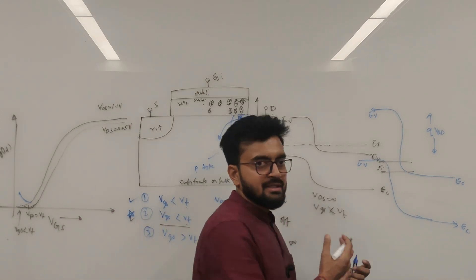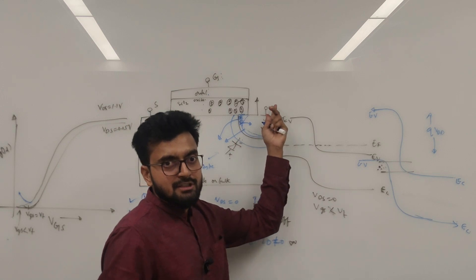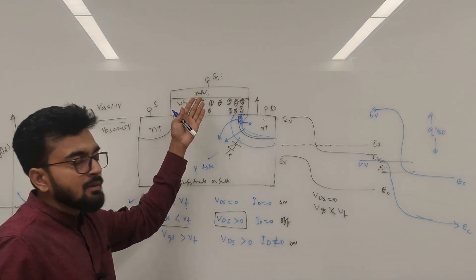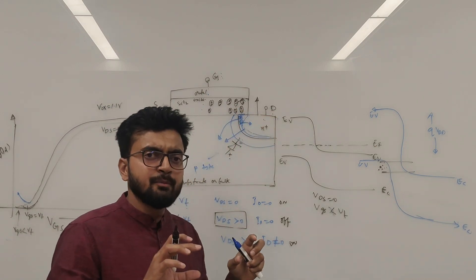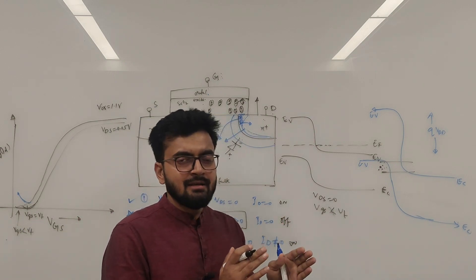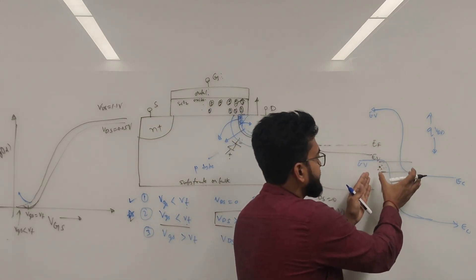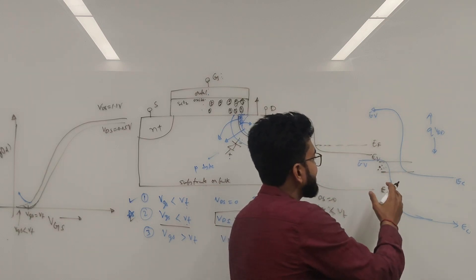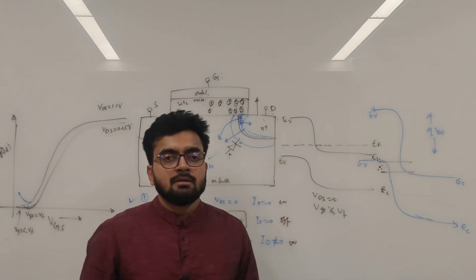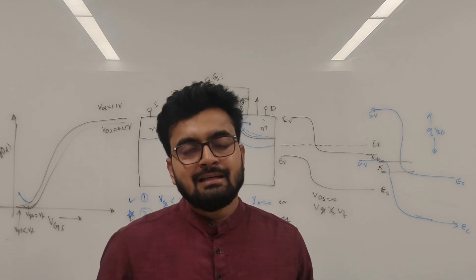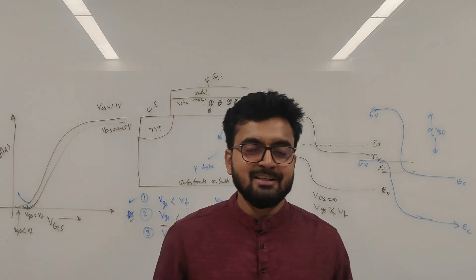This is known as band-to-band tunneling. The graph gets steeper as we increase the voltage at the drain while keeping the gate voltage fixed, or by fixing the drain voltage and reducing the gate voltage. The key idea is that as the potential difference between the drain and the gate increases, the energy bands become steeper, and it becomes easier for electrons to tunnel from the valence band into the conduction band. That's all about gate-induced drain leakage — hope you found this information helpful and insightful. See you in the next video, thank you.